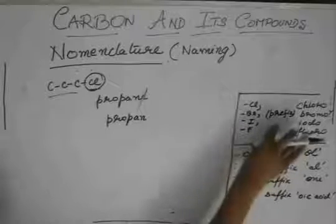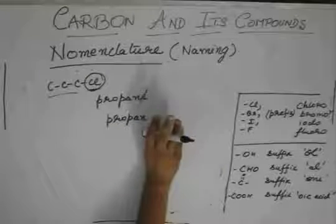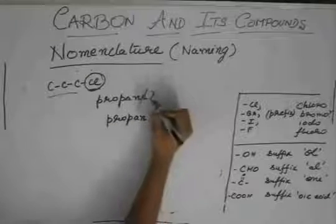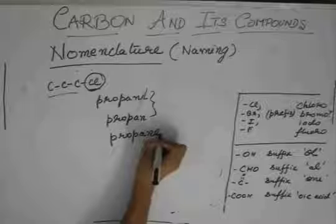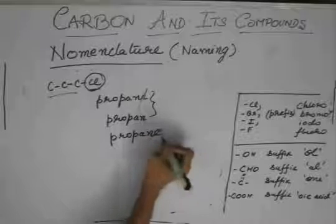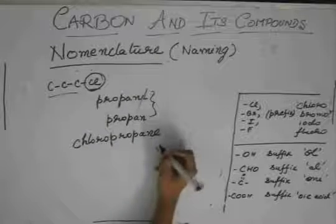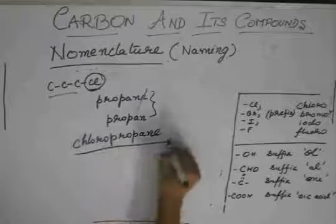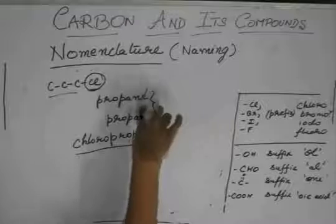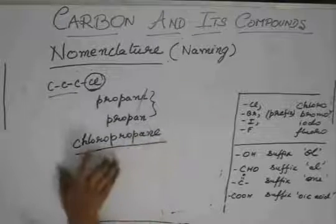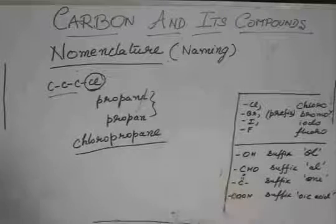Chlorine has a prefix. In prefix, we don't actually have to delete this E. So it remains propane but there is a preceding chloro. This compound is chloropropane. In case of prefix, we do not have to delete this E. We just have to add the prefix to the name propane, butane, etc.